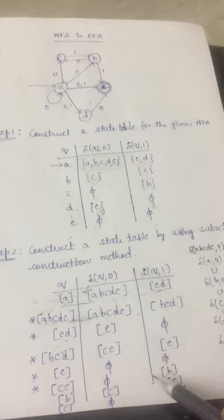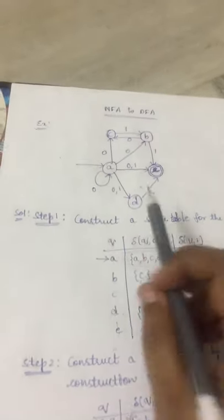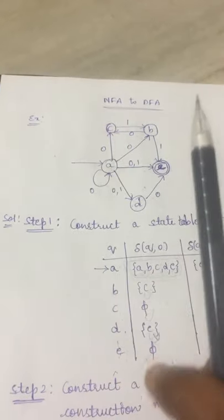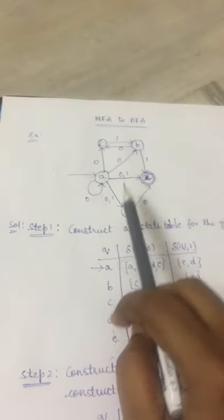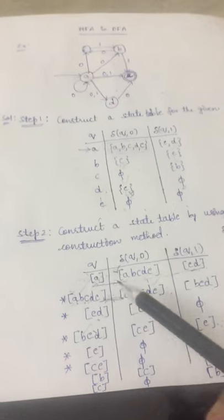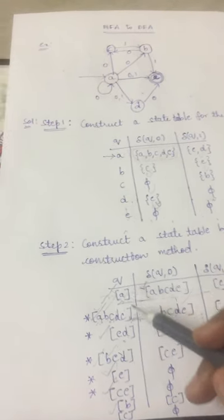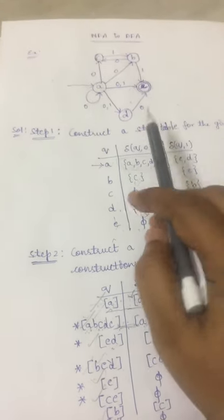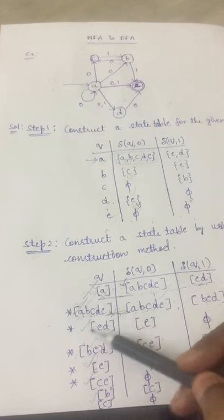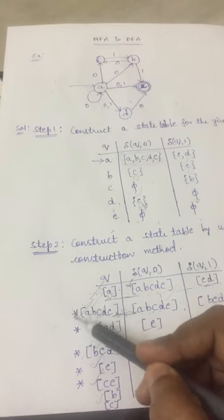This is step 2. Coming to the last step, from the state table constructed in step 2, we have to construct the state diagram. In order to construct the state diagram, we have to first identify the initial and final states. From the question, A is the initial state, so A remains the initial state in step 3. The final state in the question is E. From our new DFA states, wherever E is present, those all will become the final states.